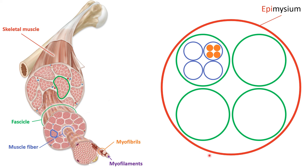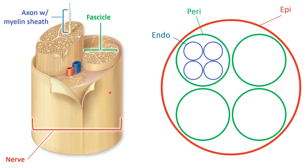The connective tissue that wraps around the fascicle is the perimysium, and the connective tissue around the muscle fiber itself is the endomysium. So those represent the three layers. Now let's compare this pattern to that of a nerve, because we can use the exact same sketch — we just need to change the parts of the word. We're going to leave our endo, our peri, and our epi, and look at the structure of a nerve as a whole.